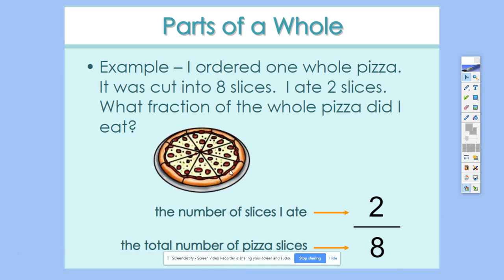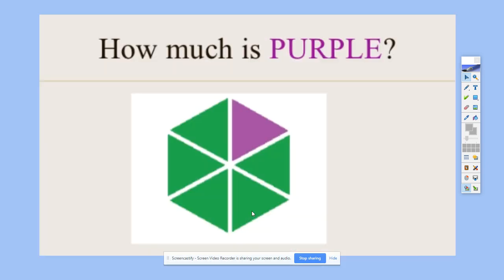If I eat all of the pizzas, all eight, then eight out of eight pieces. All right. You guys try this one. Here is a hexagon. How much of the hexagon is purple? All right. If you said one out of six pieces, you are absolutely correct.